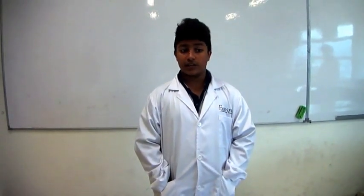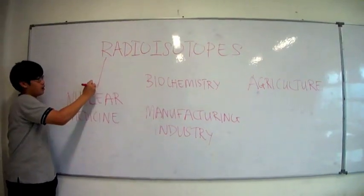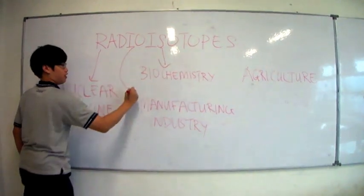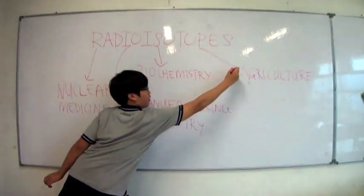Radioisotopes are produced as a byproduct of nuclear reactors and by radioisotope generators such as cyclotrons. Many man-made radioisotopes are used in the fields of nuclear medicine, biochemistry, the manufacturing industry, and agriculture.